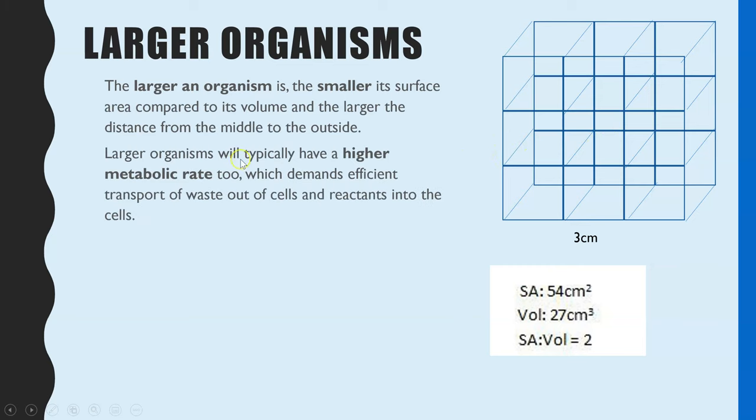They will also typically have much higher metabolic rates, which means the speed of the chemical reactions. And therefore, there's bigger demands to remove waste, but also to get enough oxygen and glucose to cells for respiration. And that's because the bigger you are, the more cells you have.